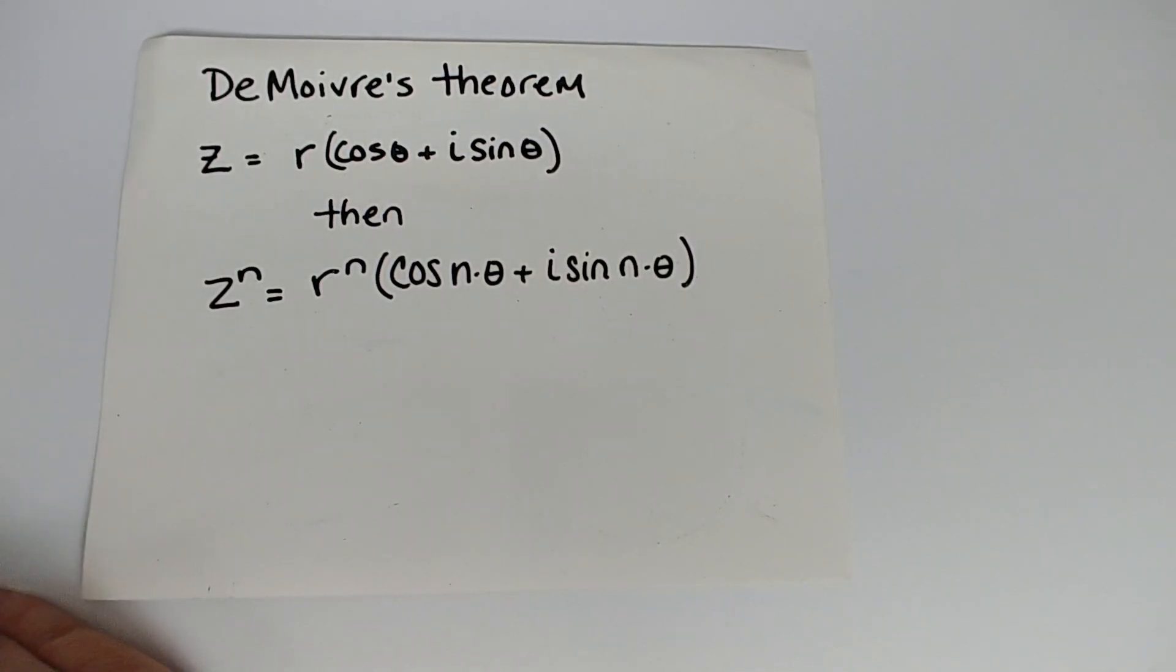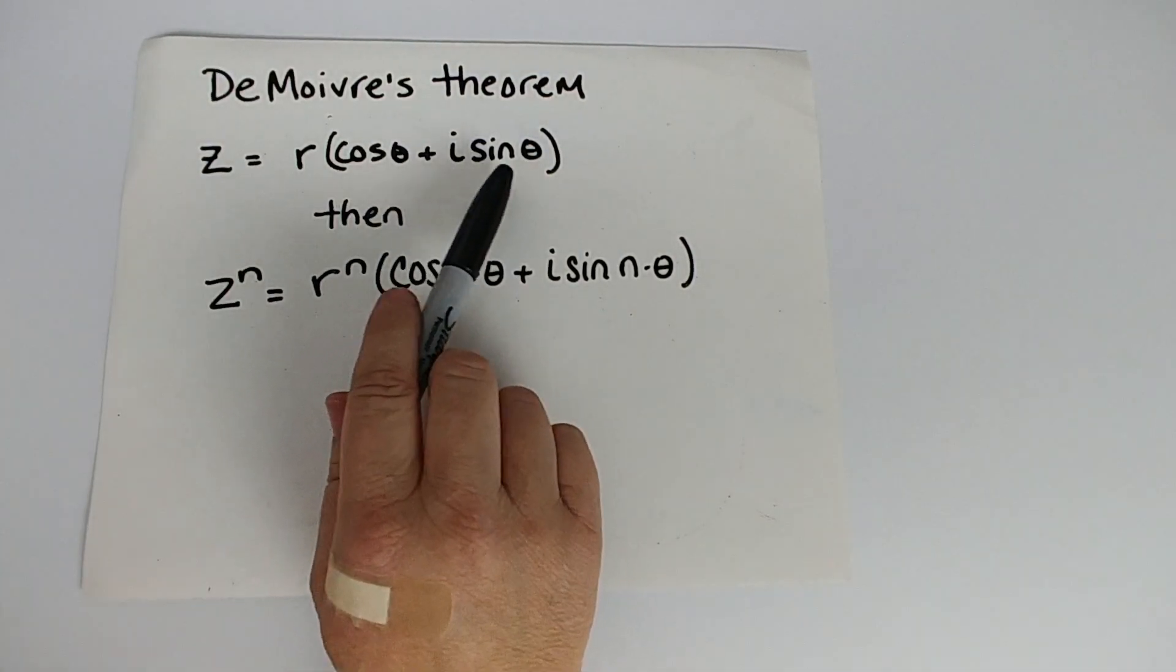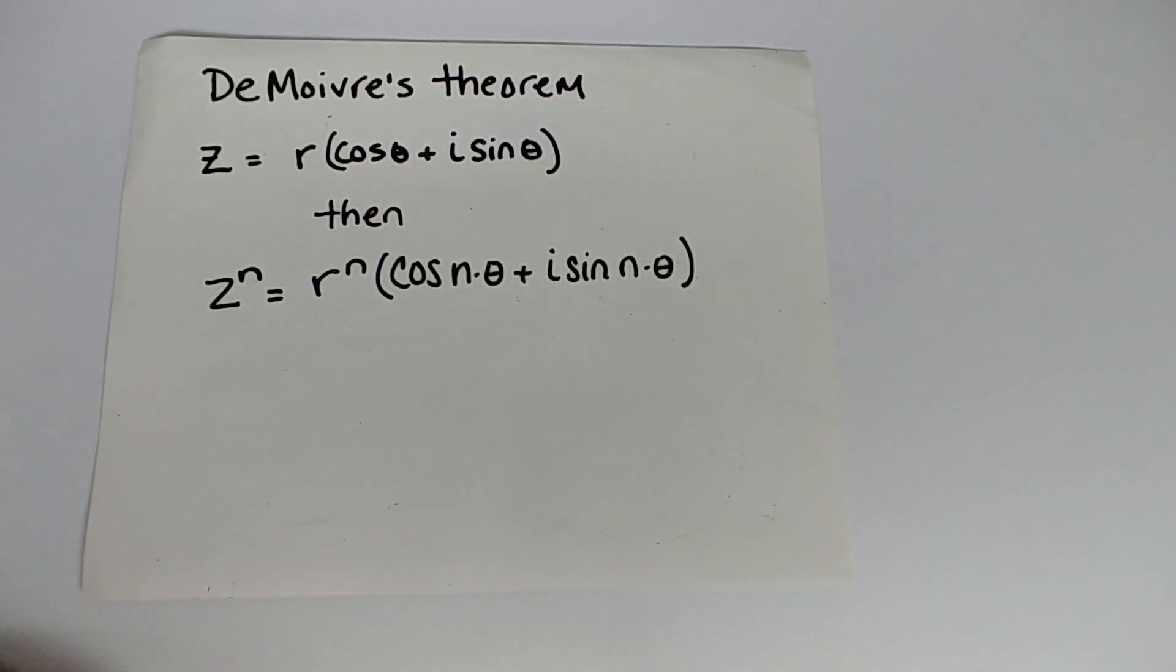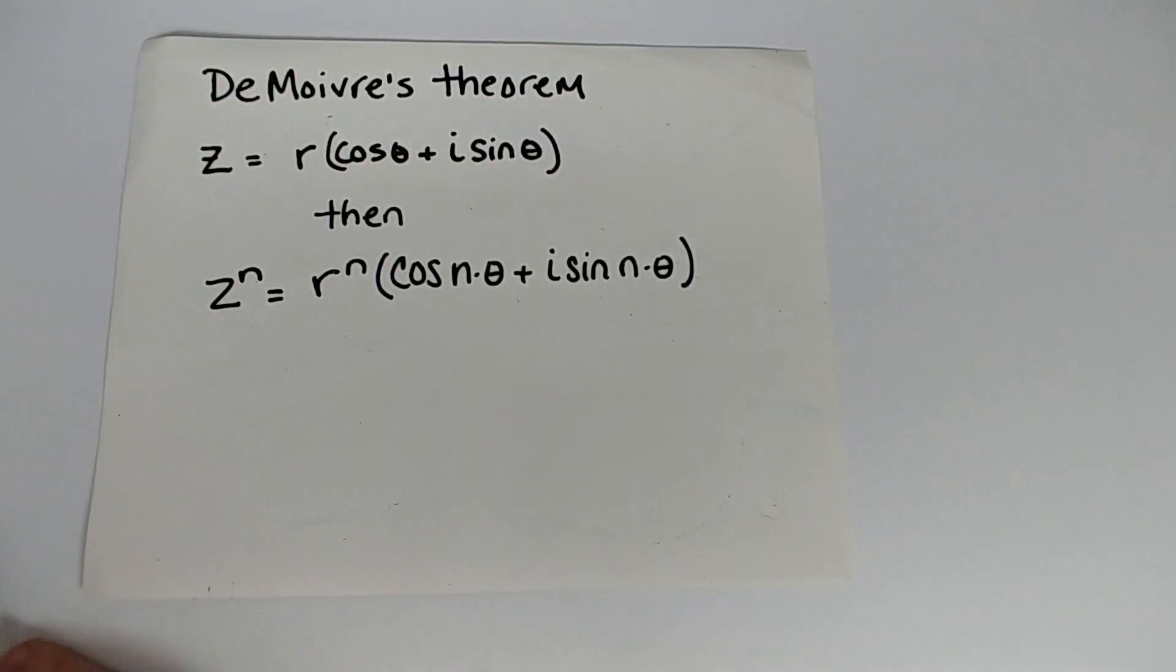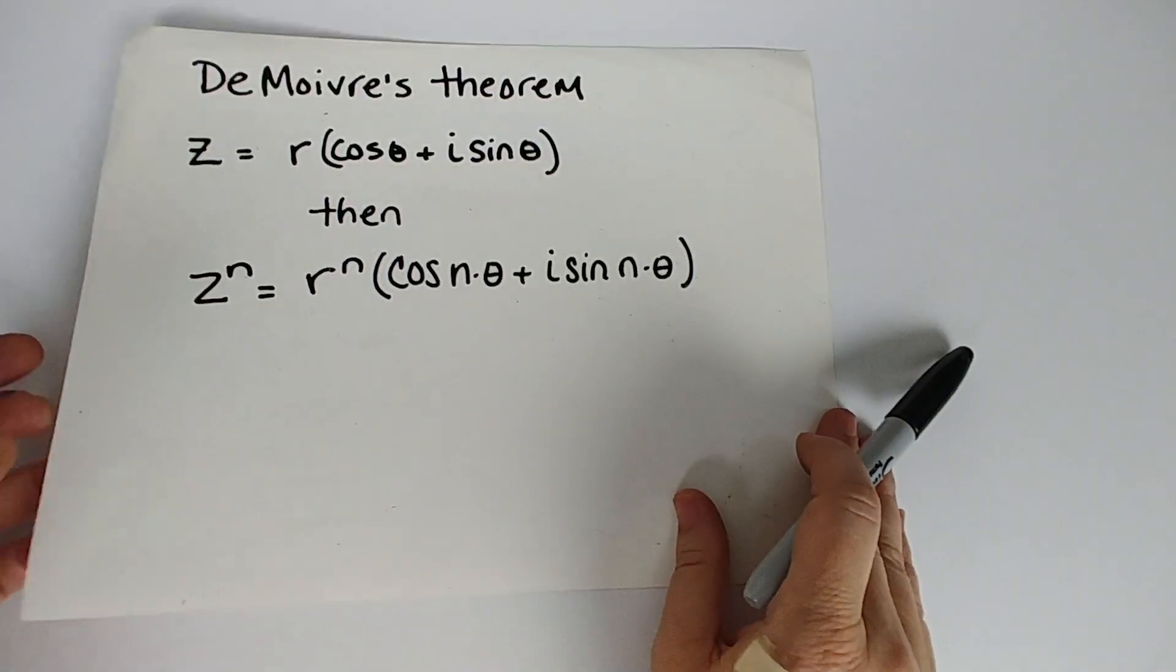DeMoivre's Theorem says if you have a complex number z written in polar form, we have the magnitude r times the quantity cosine theta plus i sine theta, and you want to raise that complex number to a power n, then you simply take the magnitude, raise it to the nth power, and you multiply the angle that you're dealing with by n. So we first have to get this thing into polar form.